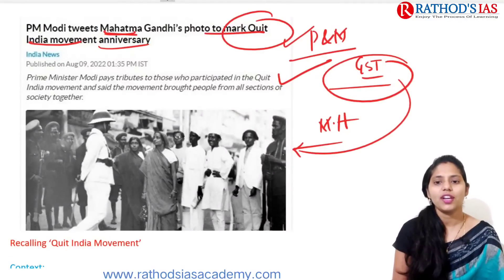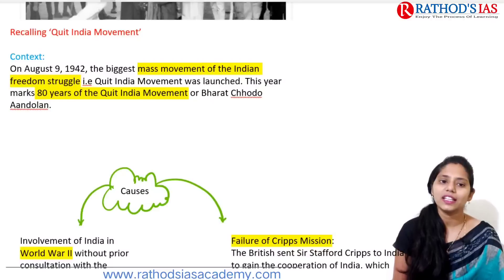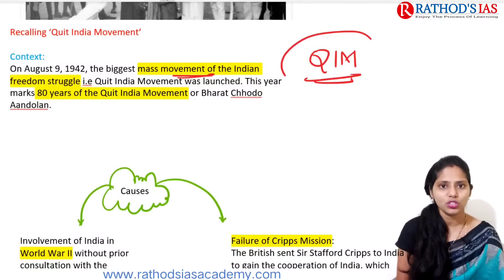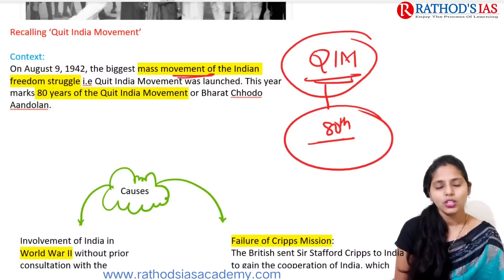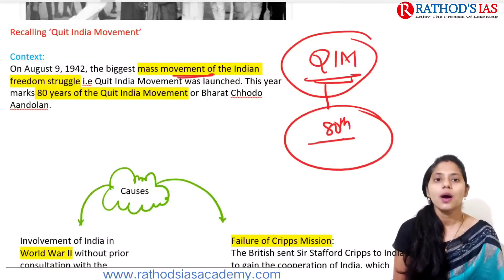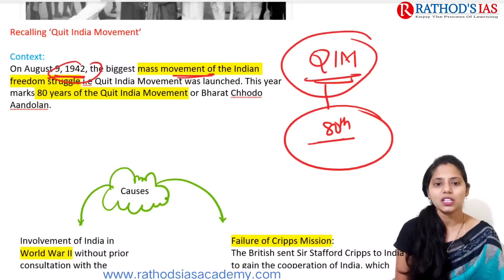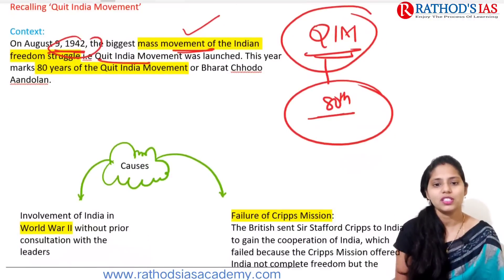On August 9th, 1942, the biggest mass movement of the Indian freedom struggle — the Quit India Movement — was launched. This year marks the 80th anniversary of the Quit India Movement. It is also called 'Bharat Chodo Andolan.'